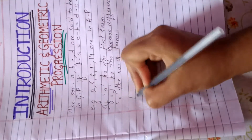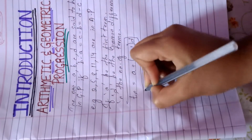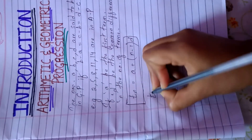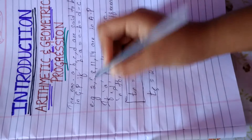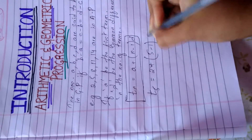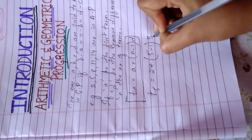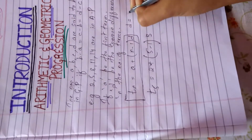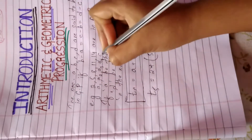The formula for the nth term is a plus (n minus 1) into d. This is the formula you have to apply in Exercise 9.1. So let's find the fifth term. Fifth term equals: a is 2, plus n is 5, minus 1, into d — common difference. This is a1, a2, a3, a4, and a5.